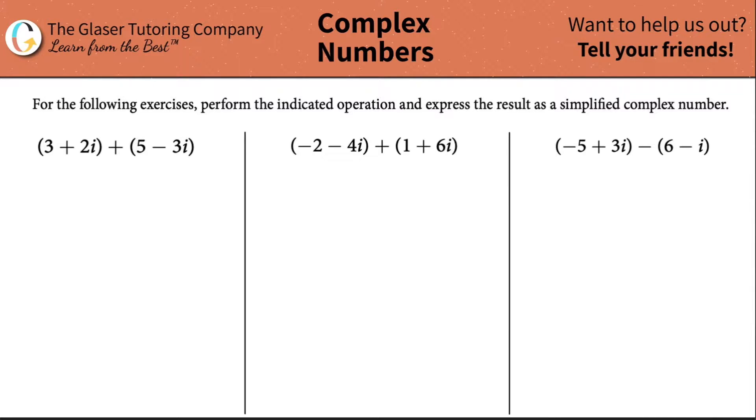For the following exercises, perform the indicated operation and express the result as a simplified complex number. Okay, so for the first one, we have 3 plus 2i plus 5 minus 3i.